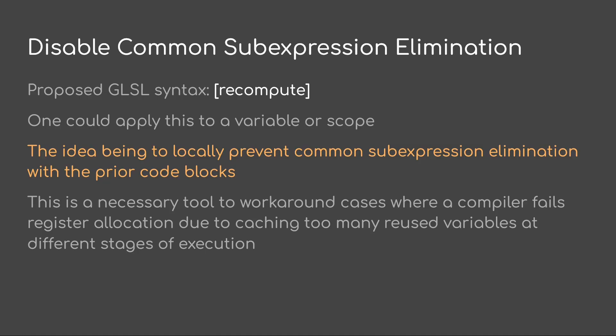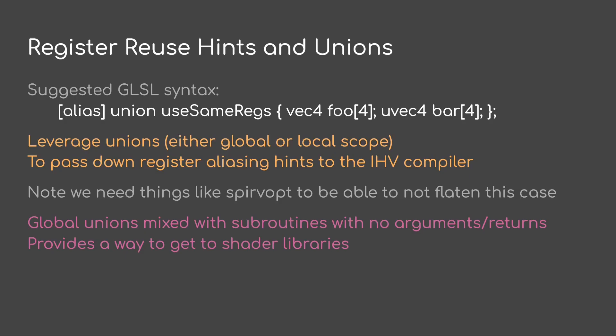Well, there is a workaround — you add fake coordinates that the compiler doesn't know is zero to the coordinates on the second load. And that's kind of stupid that we have to go to that extent. Another thing for register pressure problems is it would be nice to be able to explicitly hint about register reuse.